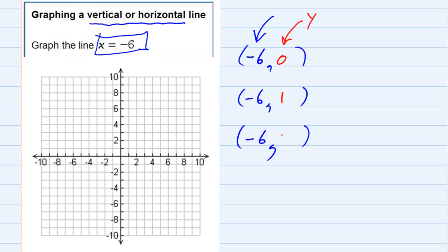Since there's no y anywhere in the equation, that means y can be anything. So I chose 0, 1, and 2, and my coordinates are then negative six zero, which would be right here.